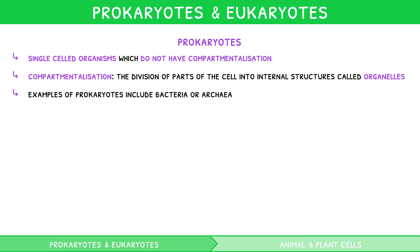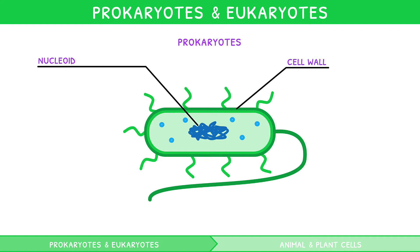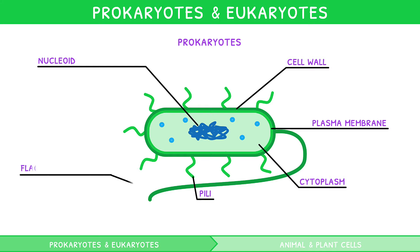All prokaryotes contain seven main structures. These are a nucleoid, a cell wall, a plasma membrane, a cytoplasm, pili, flagella, and 70S ribosomes. Let's take a minute to explore their function. You'll need to remember these phrases for the exam.